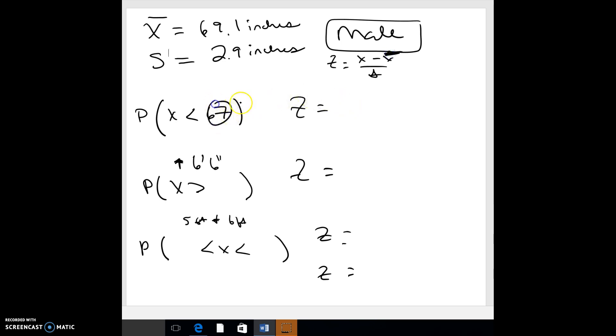So here my data is 67 compared to 69.1, and notice these have units - these are inches. If I subtract those, it's negative 2.1 inches, and then divide by the standard deviation to figure out if that's a big deal or not. That's 2.9 inches, so negative 0.72.